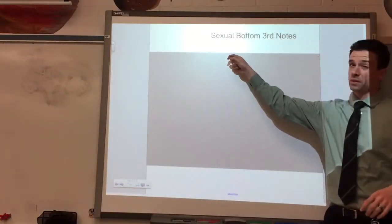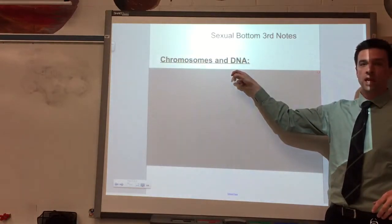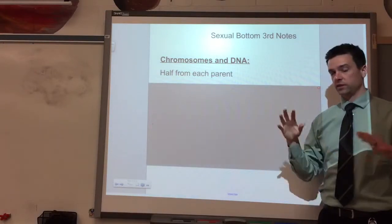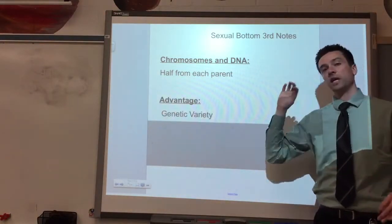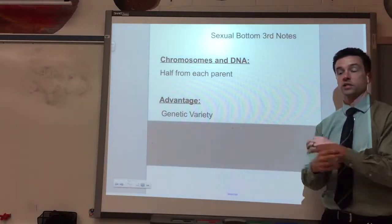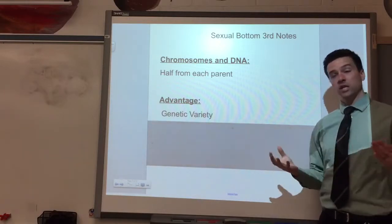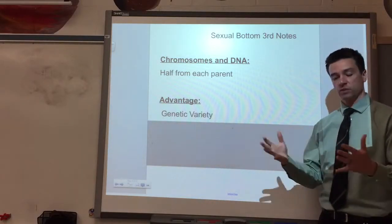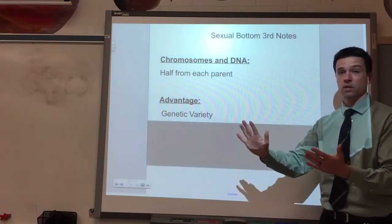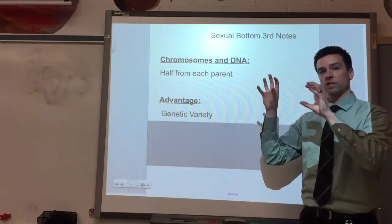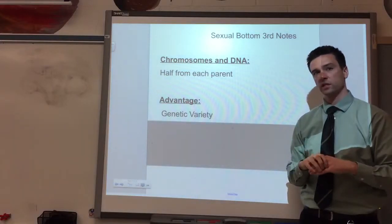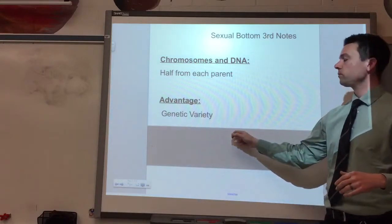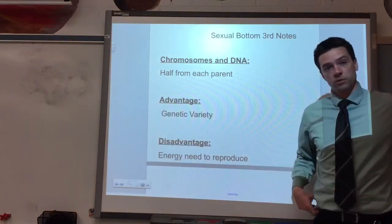The notes for sexual reproduction are pretty much the opposite of asexual reproduction. From a chromosome and DNA point of view, the offspring have half the DNA from each parent, so they're no longer genetically identical. The main advantage is genetic variety. The reason we've all evolved to have sexual reproduction is because as species evolve, climates change and diseases come. A disease might wipe out 90% of a population, but because each child is genetically a little bit different, some will survive and some won't.